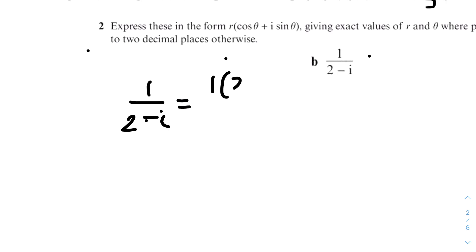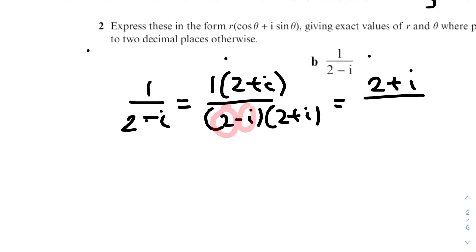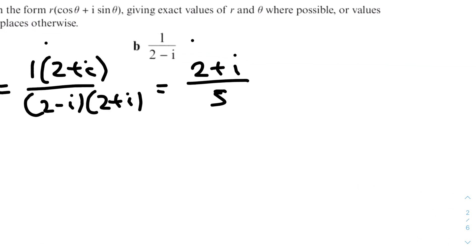So it will be 1 times (2 + i) over (2 − i)(2 + i). The top will be (2 + i) and the bottom will be 2² + 1², using the shortcut that multiplying conjugates gives the sum of squares. So 2² + 1² equals 5. Simplifying, we get 2/5 + (1/5)i.